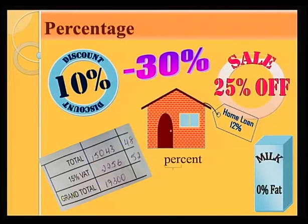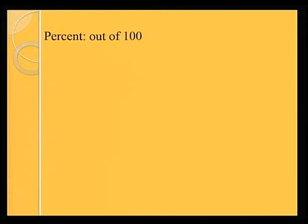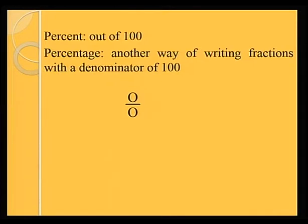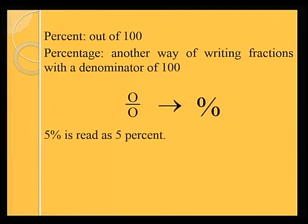Now, what is meant by percentage? The word percent — 'per' means 'out of', while 'cent' means 100. So percent means out of 100. Percentage is in fact another way of writing fractions with a denominator of 100. So instead of writing a fraction in that form, we can make use of percentage. This is the symbol we are going to use for percentage — for example, 5% is read as '5 percent'.